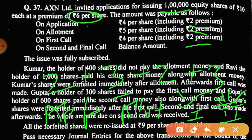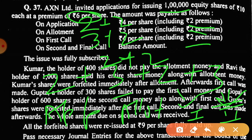Sir, but it is written four rupees on application. See students, this is including premium and I'm talking about face value. So you can say like 2 plus 2 on application, then 3 plus 2 on allotment, then 2 plus 2 at first call, and 3 at the second and final call. I hope this point is clear to you.